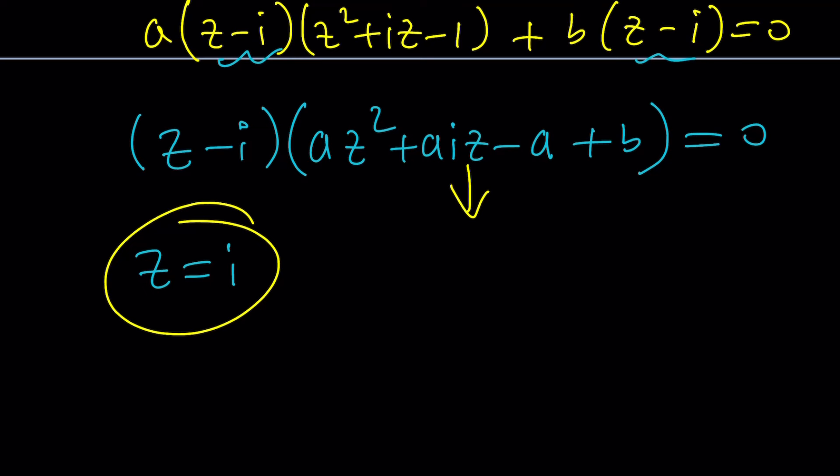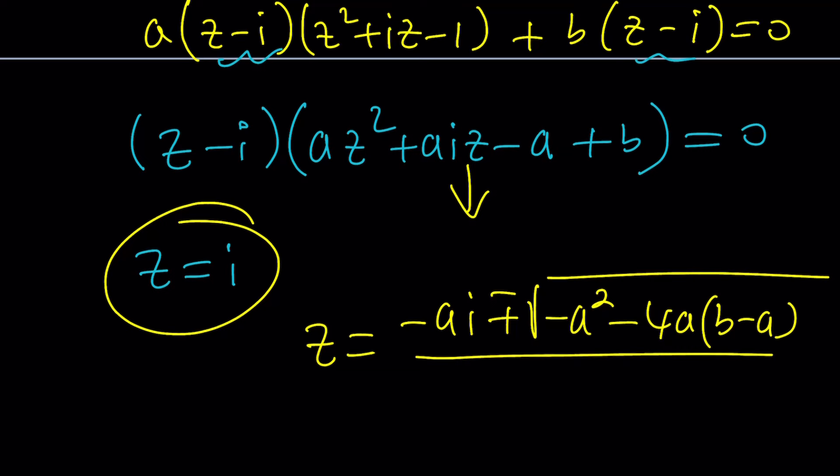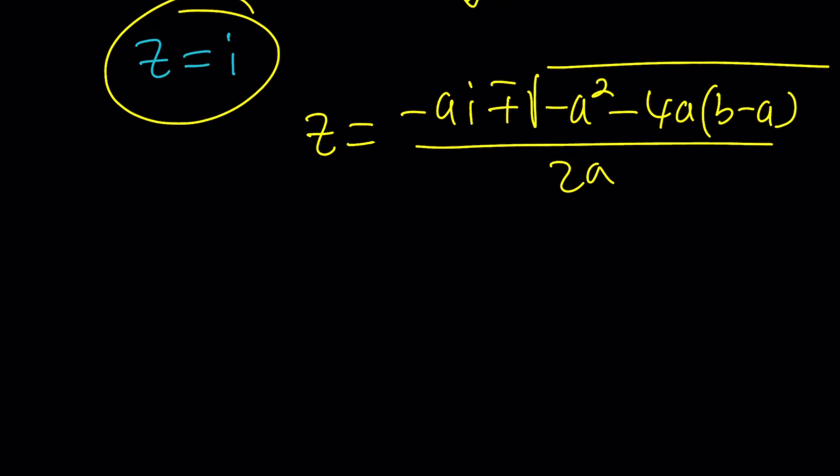Let's go ahead and use the quadratic formula. Z equals negative B plus minus the square root of B squared, which is A squared I squared. By the way, I can write this as negative A squared. Maybe I should do that. Negative A squared. That's B squared minus 4AC. 4 times A times B minus A. That's going to be my C. And all of that is divided by 2A.